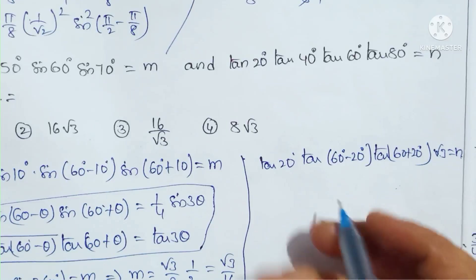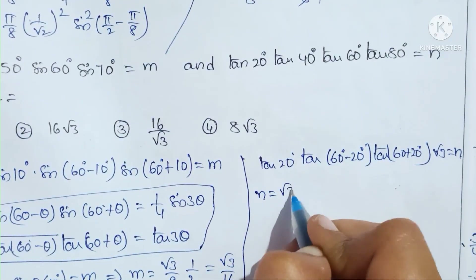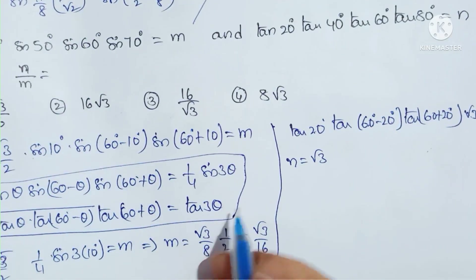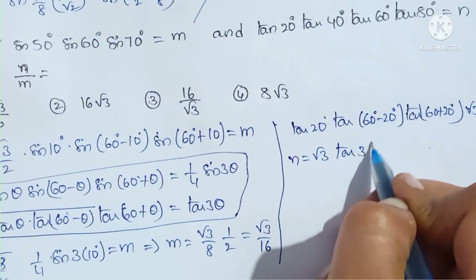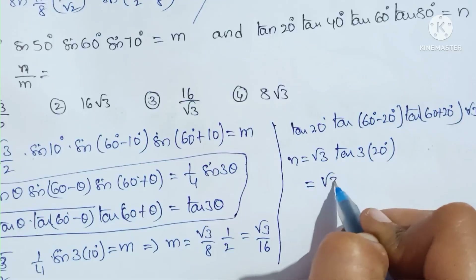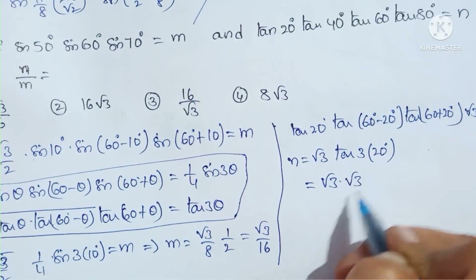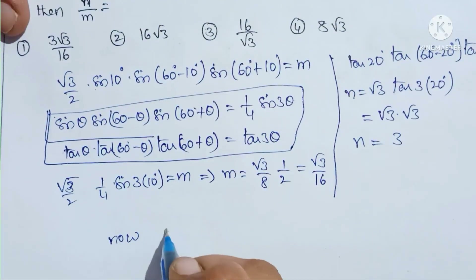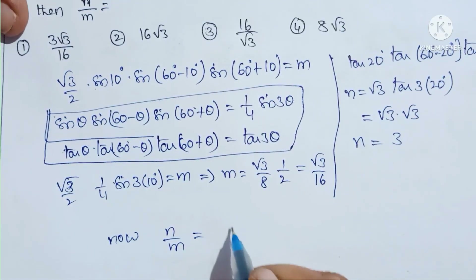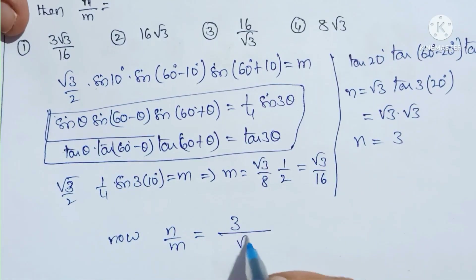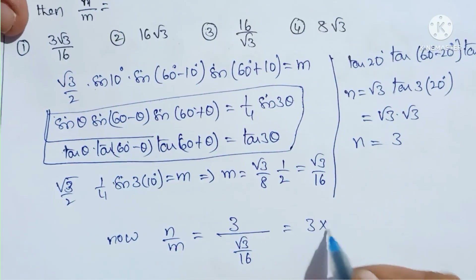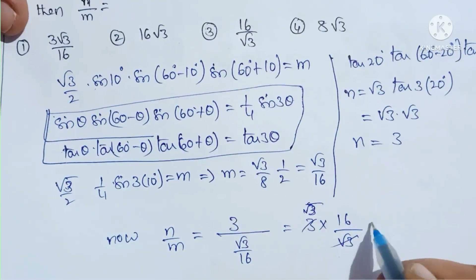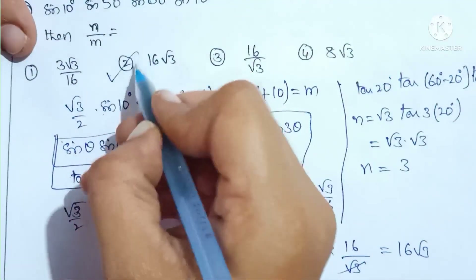So N = tan(3 × 20°) × √3... applying the identity: tan(θ)tan(60° - θ)tan(60° + θ) = tan(3θ). Therefore N = tan(60°) = √3, and multiplying gives N = 3. Now N/M = 3 ÷ (√3/16) = 3 × (16/√3) = 48/√3 = 16√3. That is option 2.